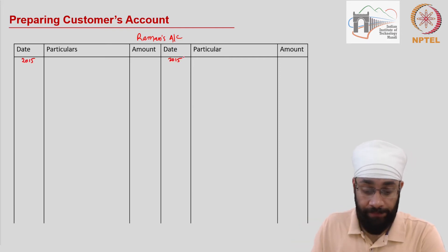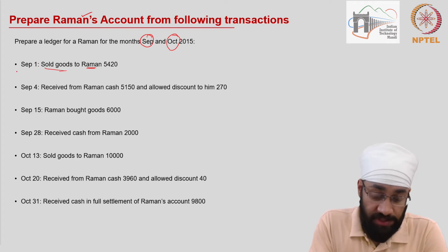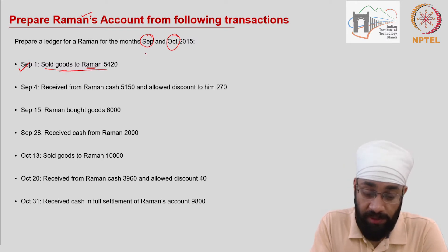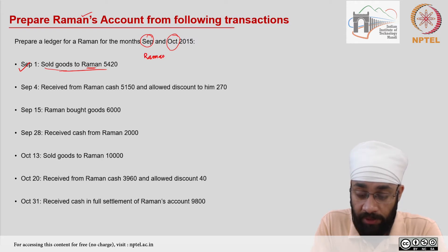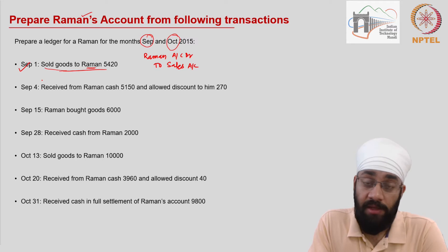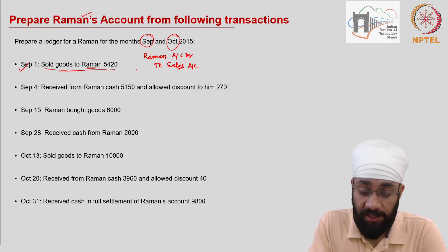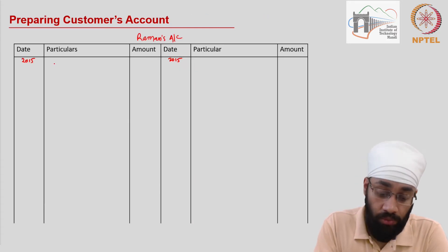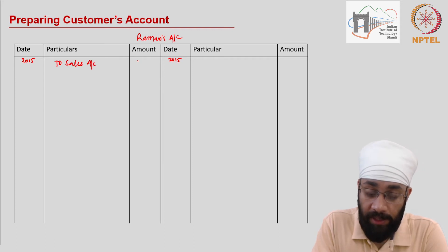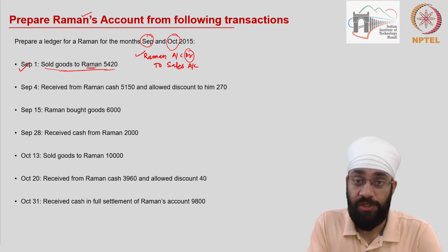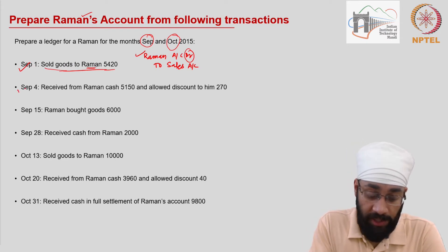Let me look at the first transaction, which is on September 1st: sold goods to Raman. When you sell goods to Raman, the journal entry is Raman account debit to sales account. It doesn't say cash, and since we have to prepare Raman's account, the credit transactions are going to be recorded. Raman's account is being debited, so I go to the debit side of Raman's account and write 'To Sales Account' with the amount 5420. This is on September 1st, so the first transaction has been posted.